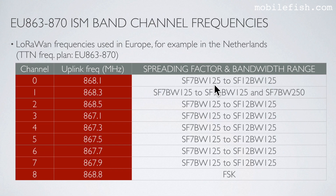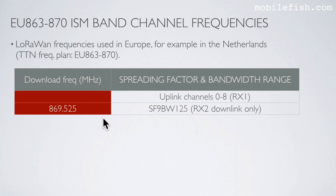I will explain spreading factors in another video. For example, this frequency uses the 125 KHz bandwidth, this frequency uses the 125 KHz bandwidth and also the 250 KHz bandwidth, while all other frequencies use the 125 KHz bandwidth. In this table you will find the download frequencies — the download frequencies are the same as the upload frequencies for slot 1, and there is an additional download frequency used for slot 2.